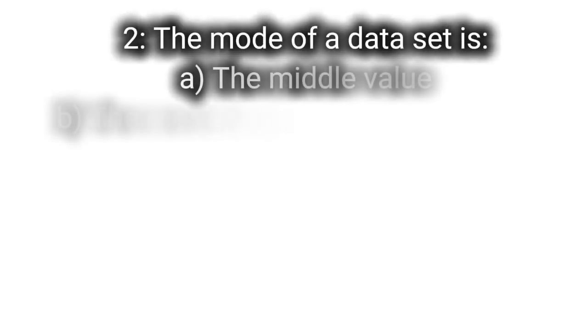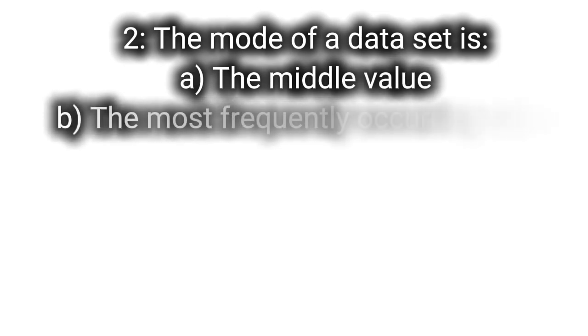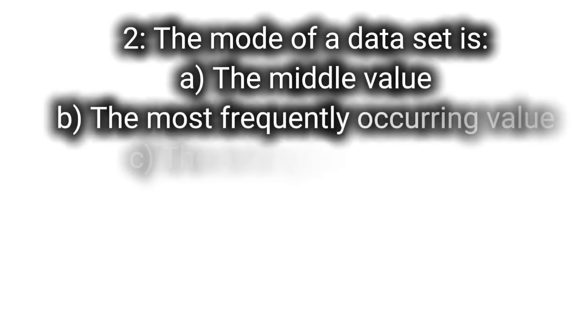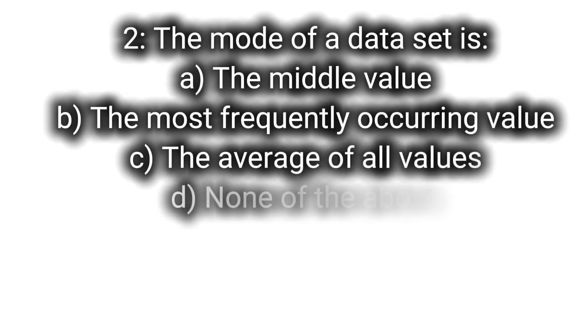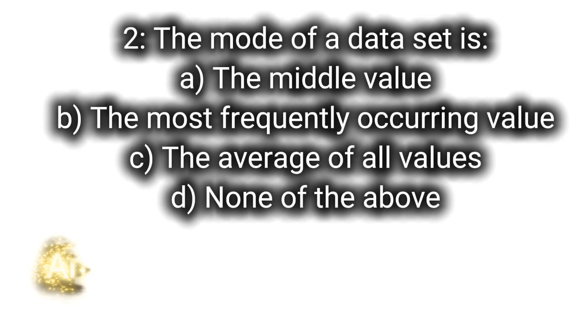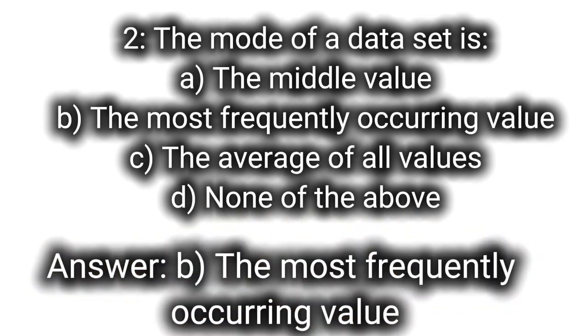Q2: The mode of a data set is A. The middle value, B. The most frequently occurring value, C. The average of all values, D. None of the above. Answer: B. The most frequently occurring value.